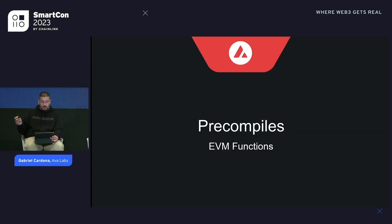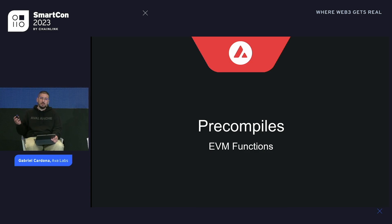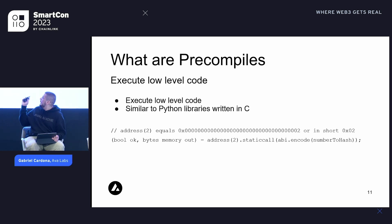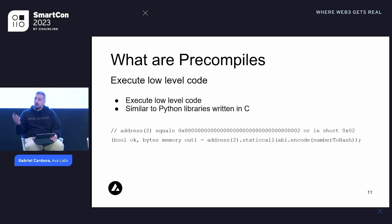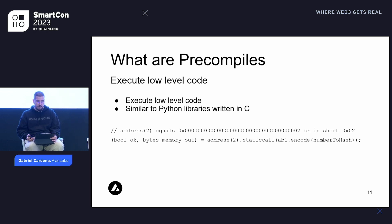Precompiles are a great way to execute code written in a low-level language such as Go from within the EVM. If you're familiar with Python programming, you might already know this paradigm — many Python functions are implemented in C because it's more efficient, and Python developers can import those modules and call them. Node.js does the same thing with C++. Precompiles are a very similar concept. They can be called from within a Solidity smart contract as if you're calling another smart contract. For example, the address 0x02 is the precompile that maps to the SHA-256 hash function — you call it, the input is encoded, the result is saved to a variable, and an OK flag indicates it executed without errors.